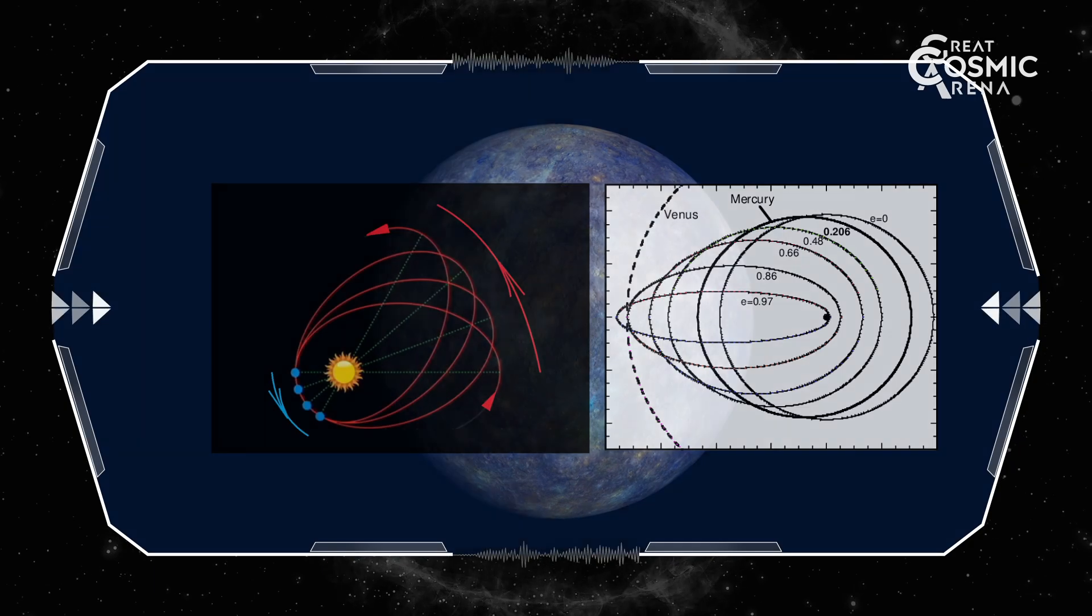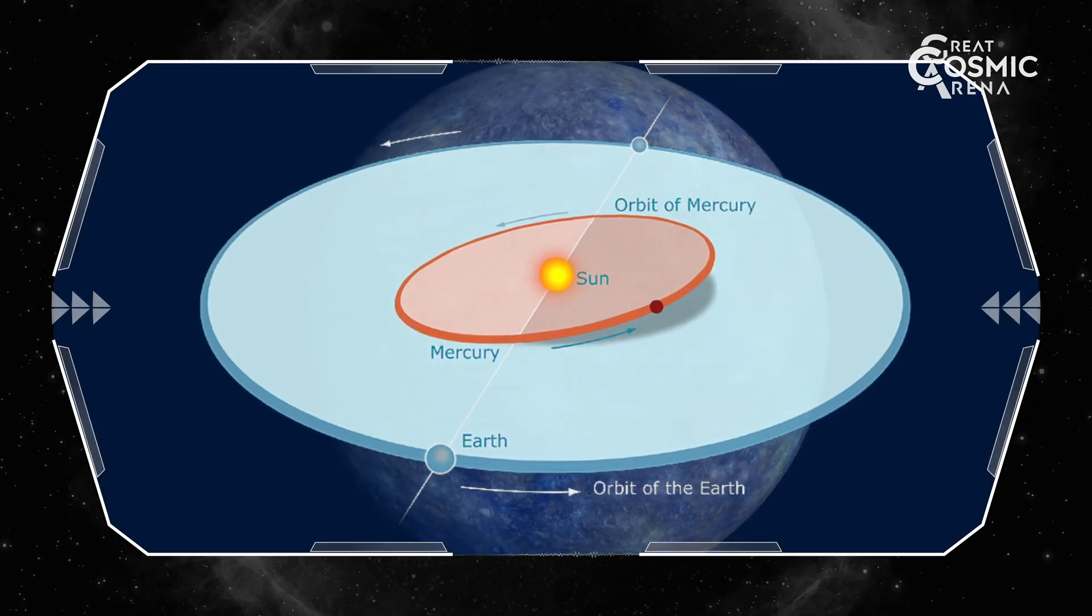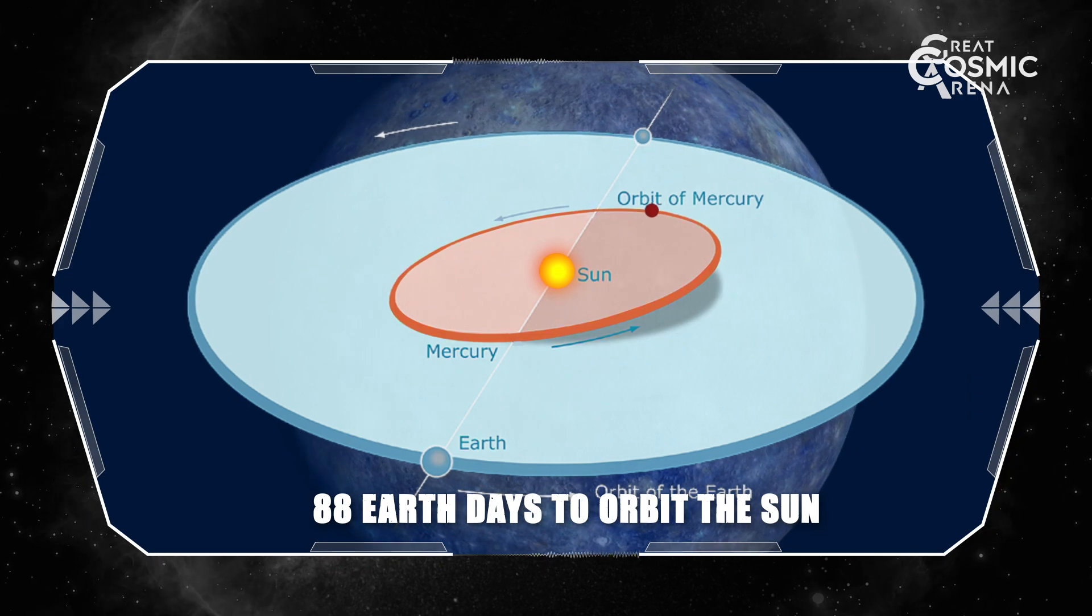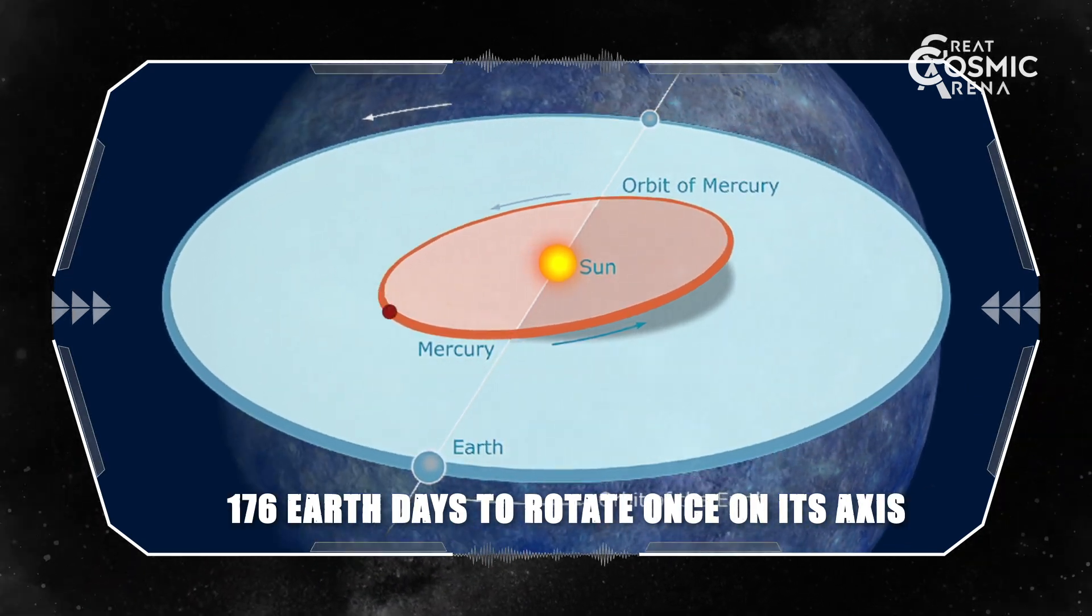Mercury's weird orbit. Mercury has a highly elliptical orbit and a day longer than its year. It takes 88 Earth days to orbit the sun, but 176 Earth days to rotate once on its axis.